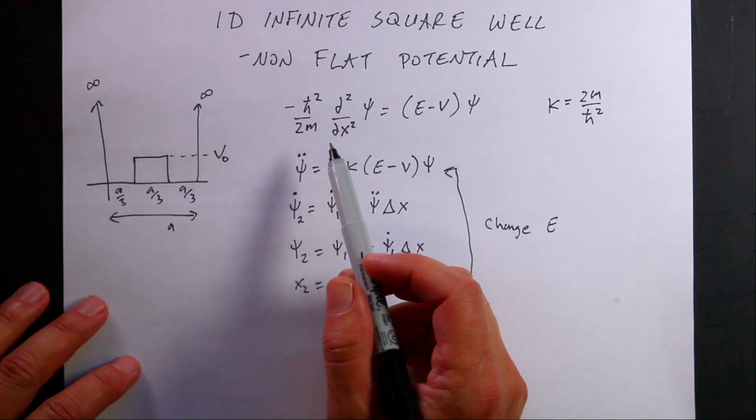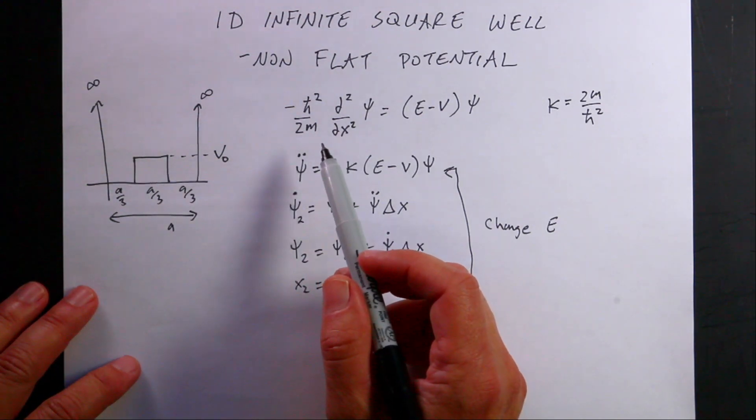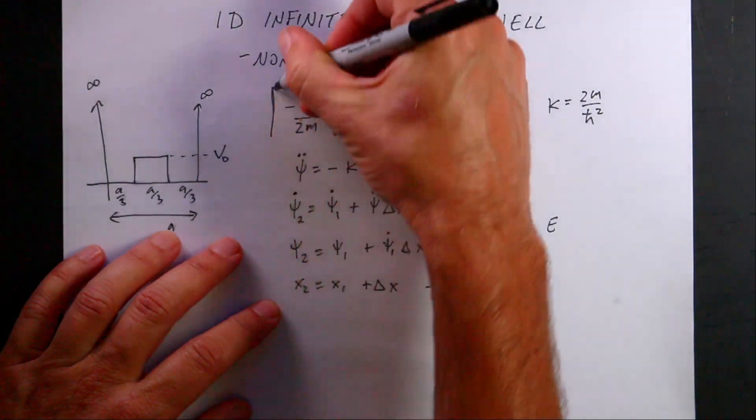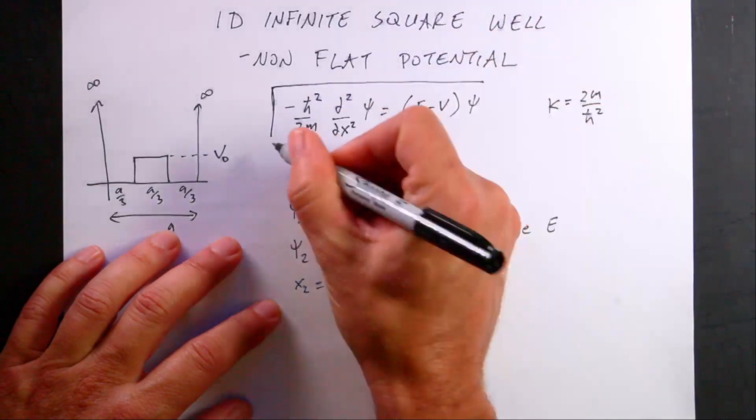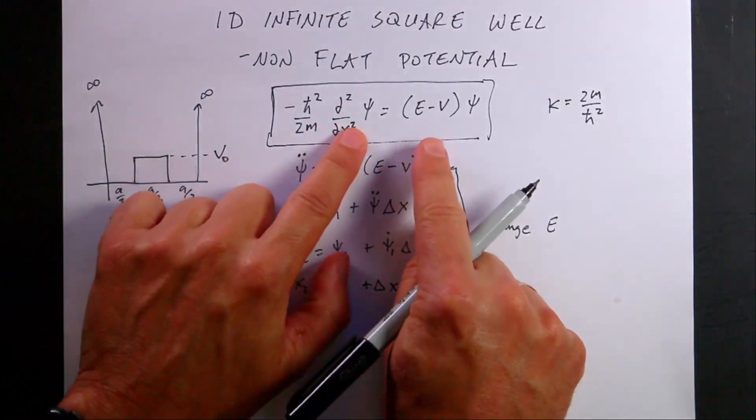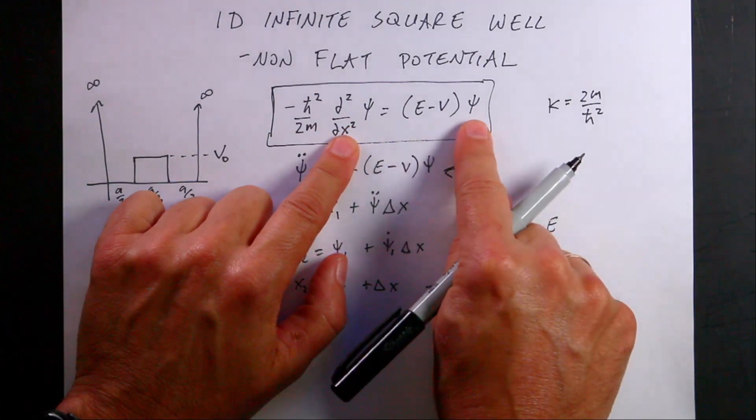So how does this work? This is called the shooting method of solving a differential equation. So here is the time independent Schrödinger equation.